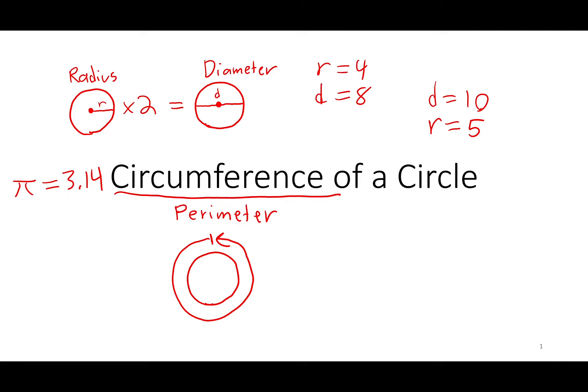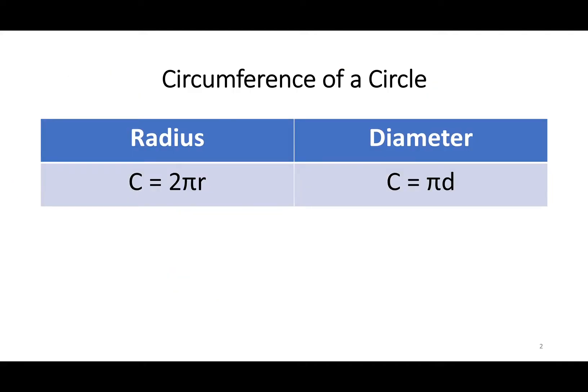Now to find the circumference of a circle, you have two formulas. You have one formula that uses radius and one formula that uses diameter. You are definitely going to want to put these in your notes. More importantly, you are going to have to eventually memorize these two formulas because they are not given to you on the test.